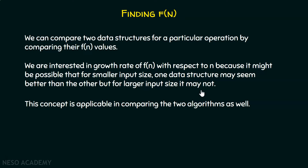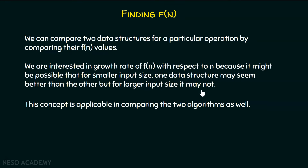We have to try different values of n and find what f(n) will be, not just for one value of n. It might be possible that one data structure seems better for smaller input size than another. This concept is applicable in comparing two algorithms as well — we can compare two algorithms or two data structures in the same way, by looking at the growth rate of f(n).